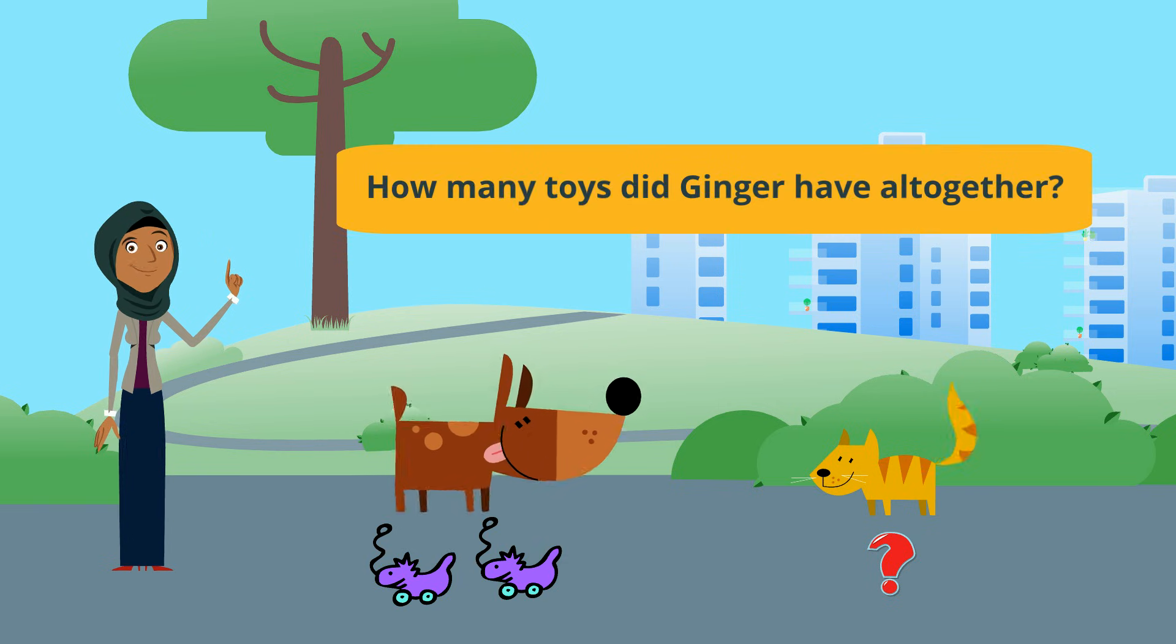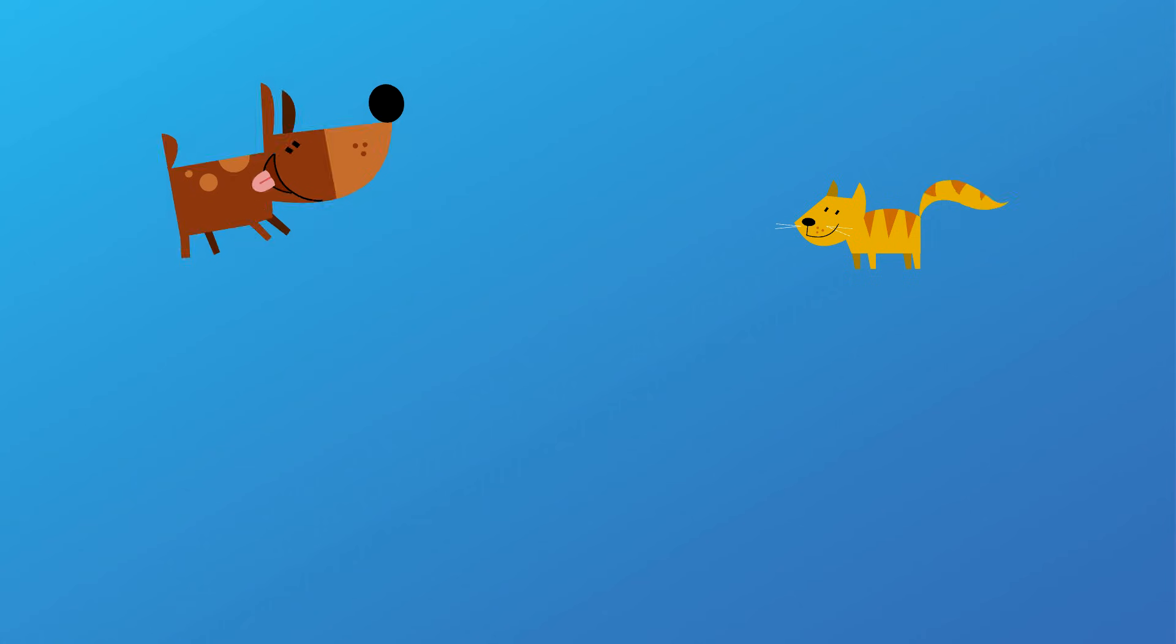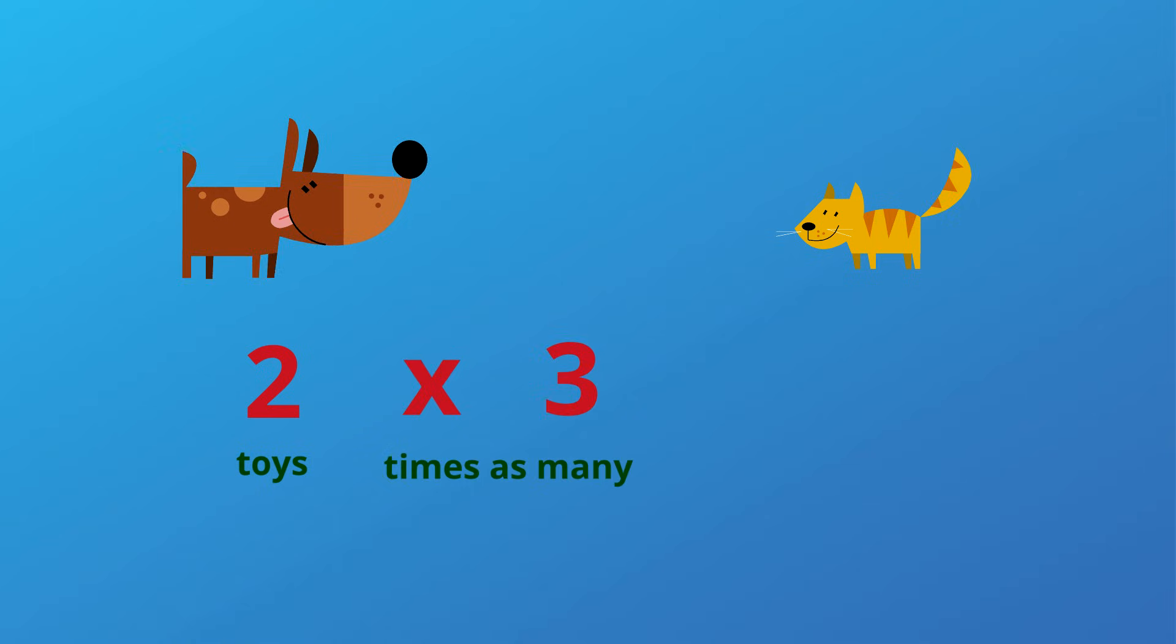This time, I'm going to use a picture and an equation to help me figure this out. Rufus had two toys and Ginger had three times as many toys. I can solve this equation to see that Ginger had six toys. Let's make sure that makes sense with the picture.